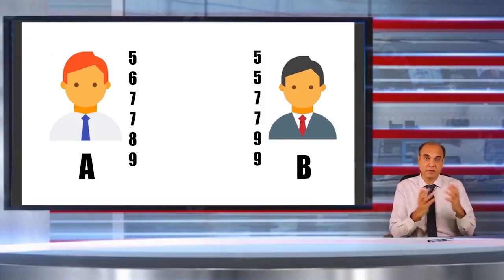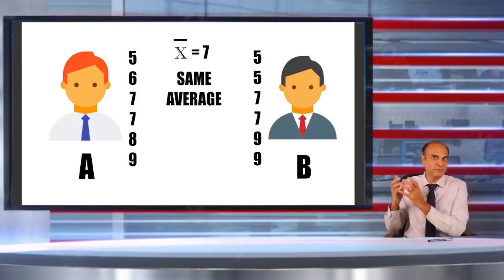If you take an average, averages for both are seven inches. If you calculate the average, x-bar is seven inches for A and seven inches for vendor B.